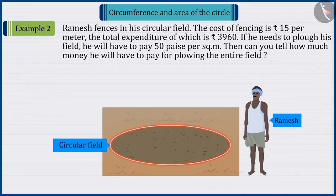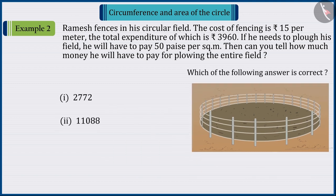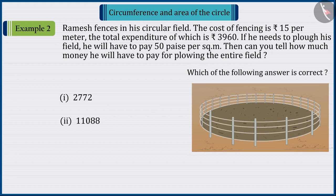Ramesh fences in his circular field. The cost of fencing is 15 rupees per meter. The total expenditure of which is 3,960 rupees. If he needs to plow his field, he will have to pay 50 paise per square meter. Then, can you tell how much money he will have to pay for plowing the entire field? Which of the following answer is correct? Pause the video to solve the question and then match your answer.